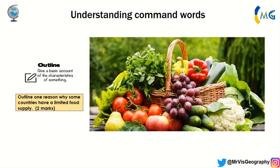Next is 'outline,' which is only for low-mark questions. For example: outline one reason why some countries have limited food supply. The biggest mistake people make is they literally just say 'a drought' — that's one mark. But for two marks, you need to say 'a drought would reduce the amount of food available by destroying crop supplies.' You've explained it. You have to give an account of the basic characteristics — tell me the drought and how it would reduce food supply.